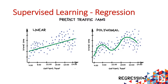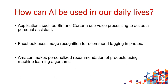As a regression, you could use linear functions or polynomial functions, depending on how complex the analysis is. Let me share some more examples of how you can use AI in your daily lives. Applications such as Siri and Cortana — you already have voice processing. Facebook uses image recognition: you can tag someone on photos. And as I mentioned, Amazon makes personalized recommendations based on experience with other clients.